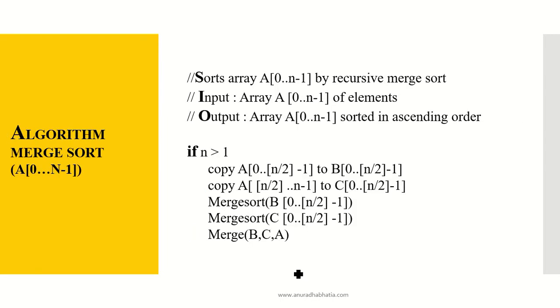Now this is an algorithm merge sort. This is how it works. This is an array A[0 to n-1] by recursive merge sort. What is my input? My input is array A[0 to n-1] of elements and output will be array A[0 to n-1] sorted in ascending order.